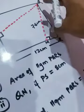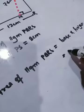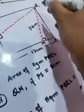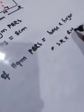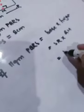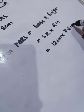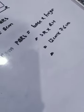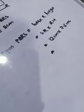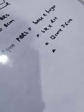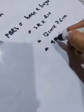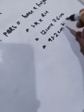The base is SR and the height is QM. SR is 12 centimeters and QM is 7.6 centimeters. So we multiply 12 by 7.6, and the answer is 91.2 centimeters square. So the area of parallelogram PQRS is 91.2 centimeters square.